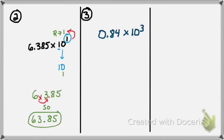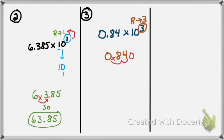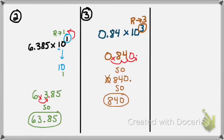Let's take a look at number 3: 0 and 84 hundredths times 10 to the third power. I know that 10 to the third power is my base 10 number, so I write down the other number: 0.84. 10 to the third is a base 10 number, so it's greater than 1. Greater means I move my decimal to the right, and my exponent is 3, so I'll be moving it three places. Cross out the decimal, move it 1, 2, then add a place value zero to move it 3 places. My answer is 0840 — removing the unnecessary leading zero, the final answer is 840.